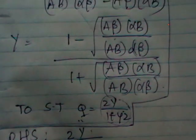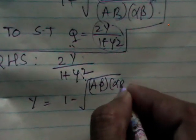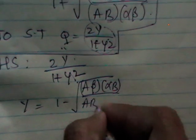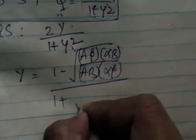And what is Y? You know Y formula as 1 minus root over A beta, alpha B by A, B, alpha, beta, by 1 plus root over.